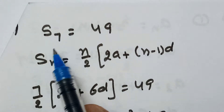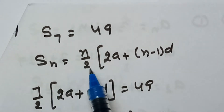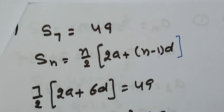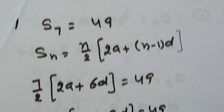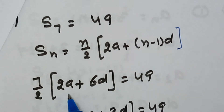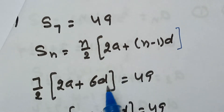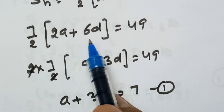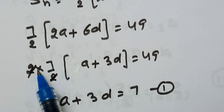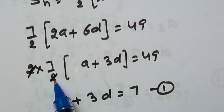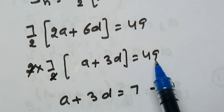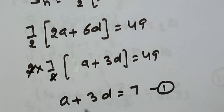We will start from S7 equals to 49. S7 can be written as N by 2 into 2A plus N minus 1 into D. We substitute N equals to 7, giving us 7 by 2 into 2A plus 6D equals to 49. Taking 2 common inside the bracket gives A plus 3D, and the 2s cancel. So 7 divided into 49 gives us A plus 3D equals to 7.